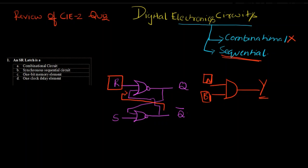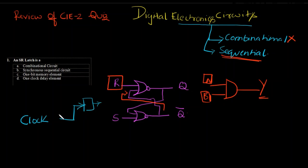The second option is synchronous sequential circuit. Yes, we know it is a sequential circuit. When do we think of synchronous? When I have a clock fed to a latch or a flip-flop, that is called synchronous. Since in a latch I don't have any clock being given, this is not a synchronous sequential circuit.